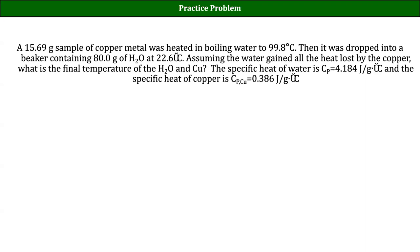We could multiply both sides by negative one, but it would make more sense to write it as Q copper equals negative Q water because the copper is losing energy. As soon as we have this, we can actually just ignore Q — we don't actually care about what Q is to answer this question. We just substitute both equations in here and solve for Tf. So we'll get, don't forget the negative sign: mass of copper times Cp of copper times (T final minus T initial of copper).